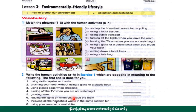Item 6: Using plastic bags when shopping. Item 7: Using plastic bags when shopping. Item 8: Turning off the TV when you are not watching it. Item 9: Growing trees. Item 10: Leaving the lights on when you leave the room. Item 11: Throwing all the household waste in the same rubbish bin. Item 12: Sorting the household waste for recycling.